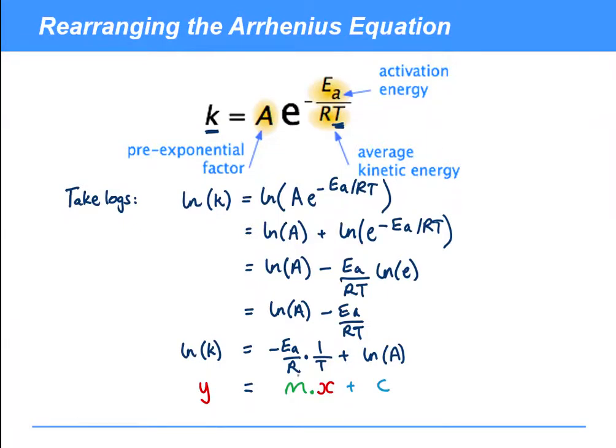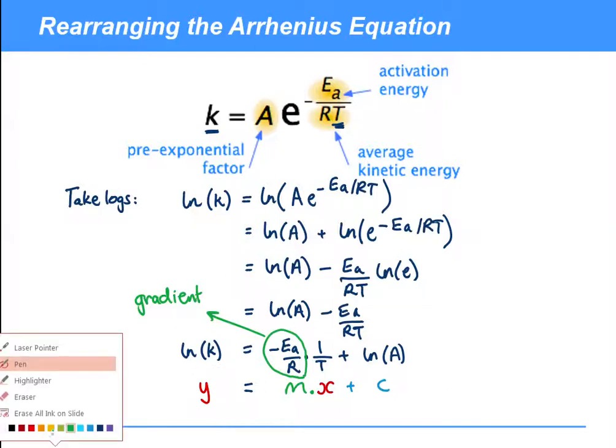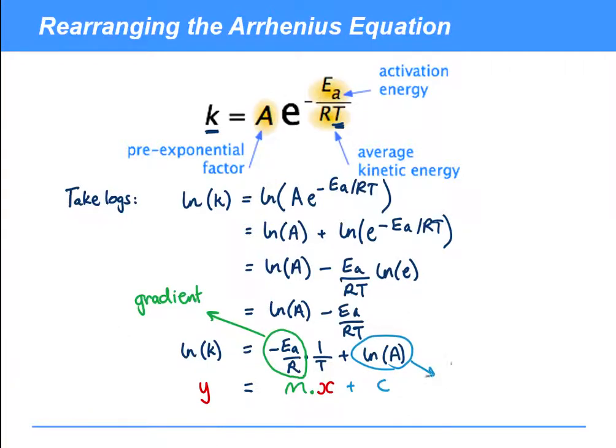So what we can essentially do is identify this quantity here as the gradient of a graph where ln K is plotted on the Y axis against one over T on the X axis. And this quantity here is then the Y intercept. I'm calling it inverted commas because it's not actually the Y axis, but it's the Y intercept.